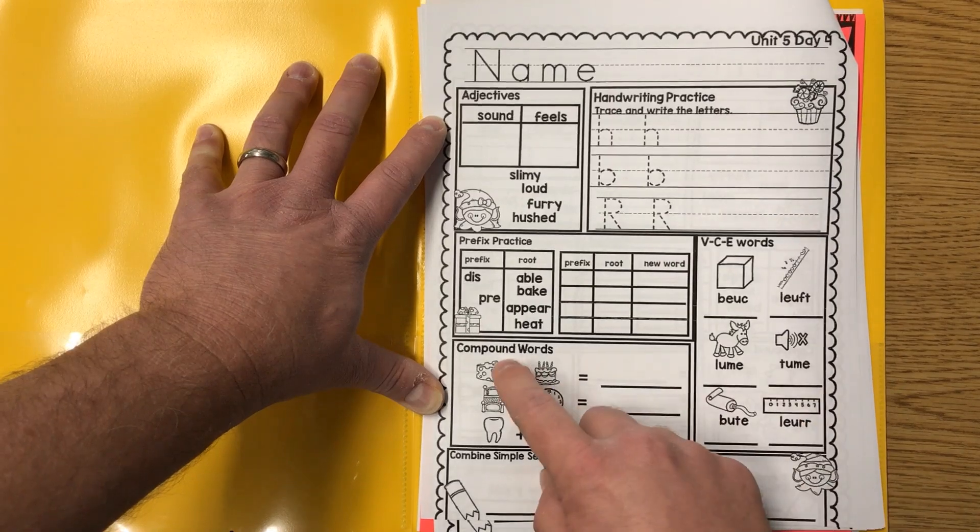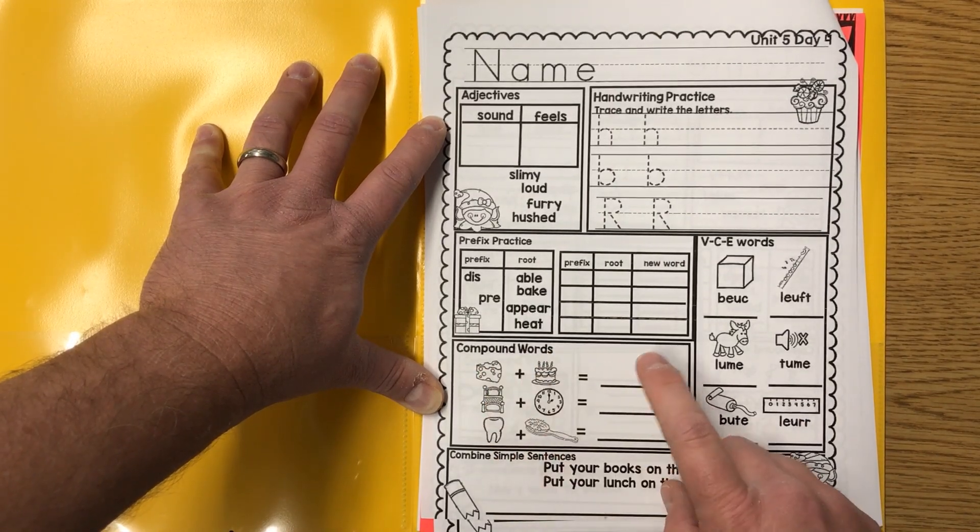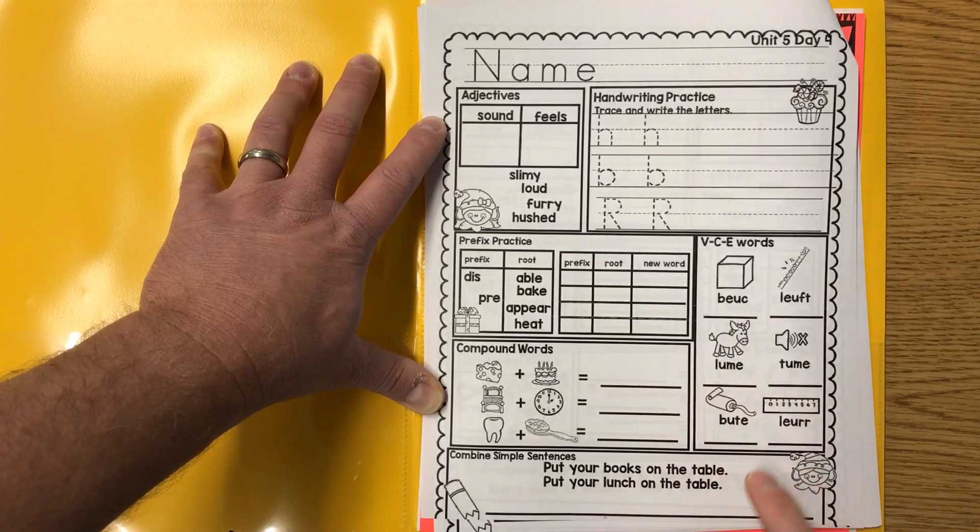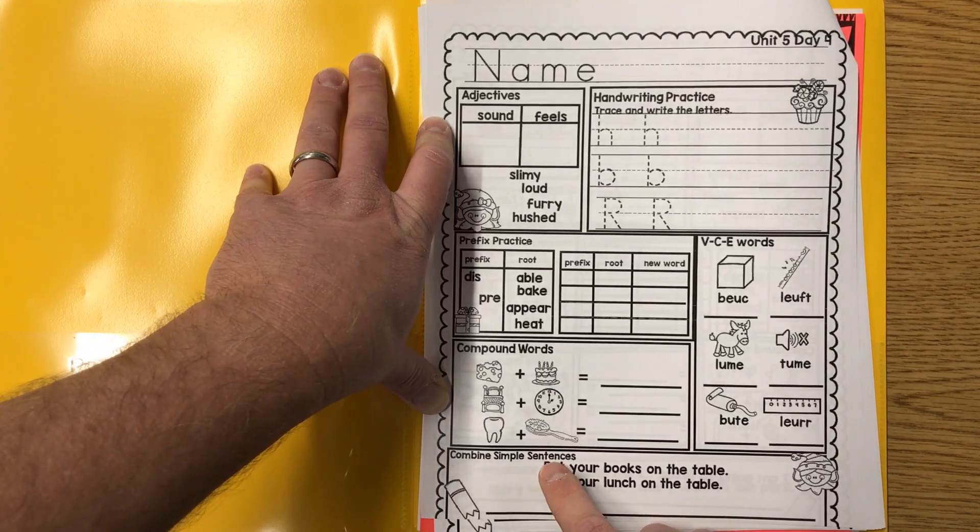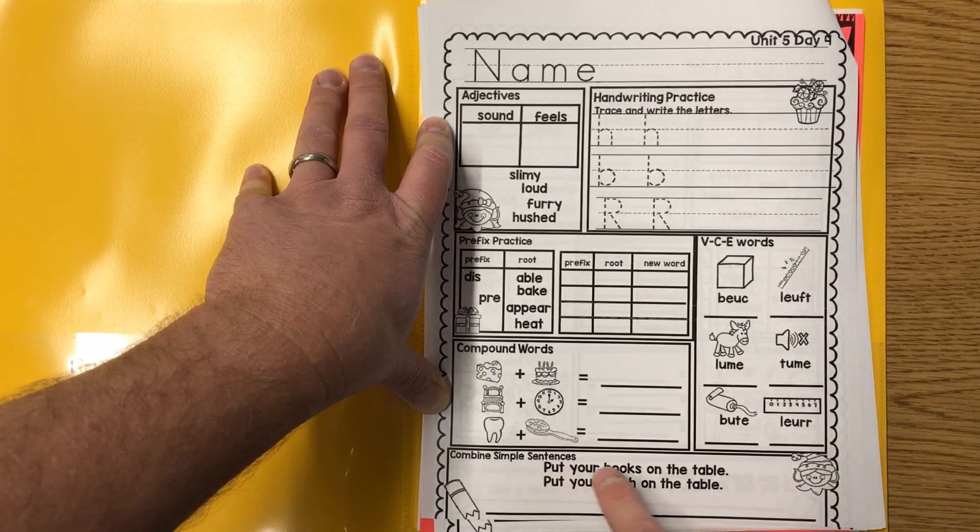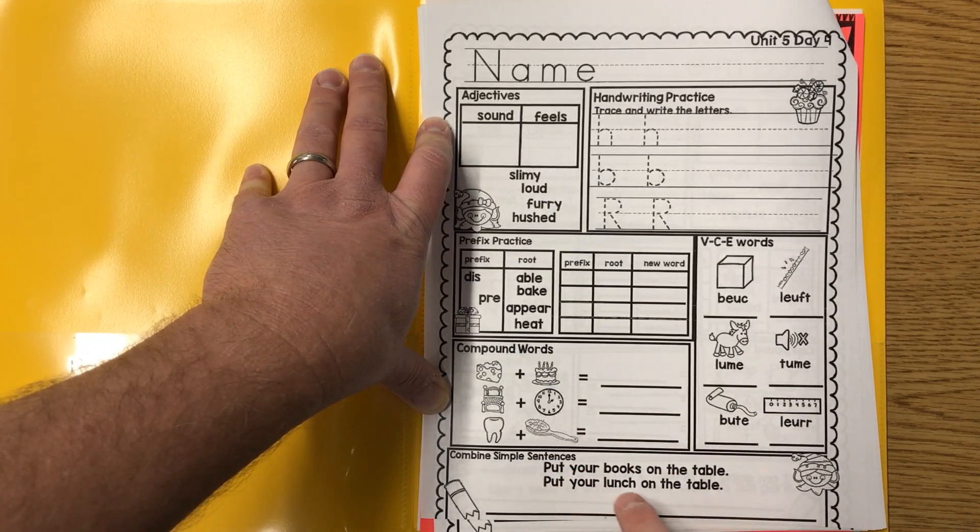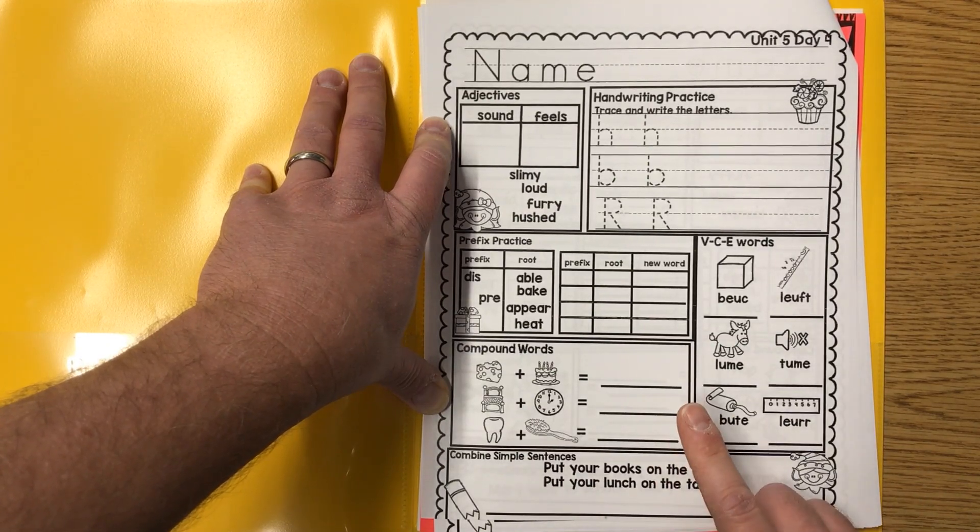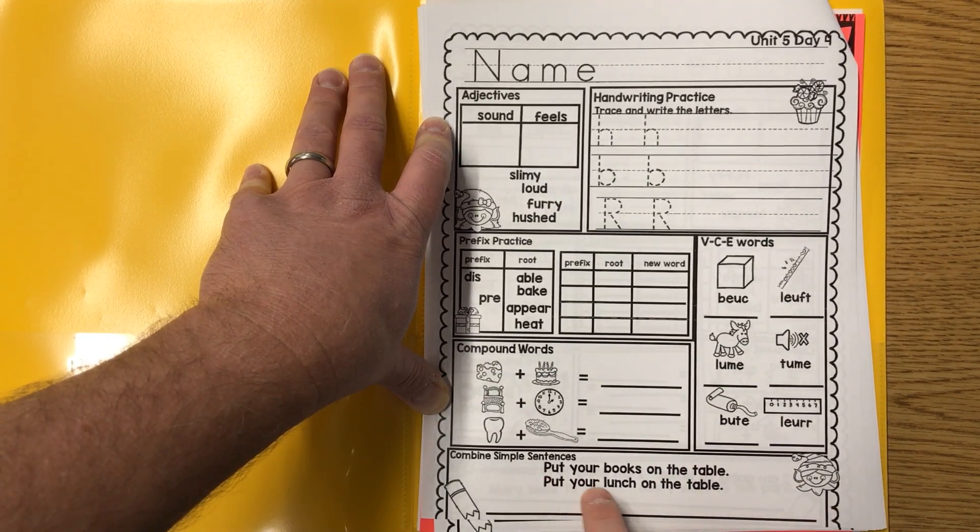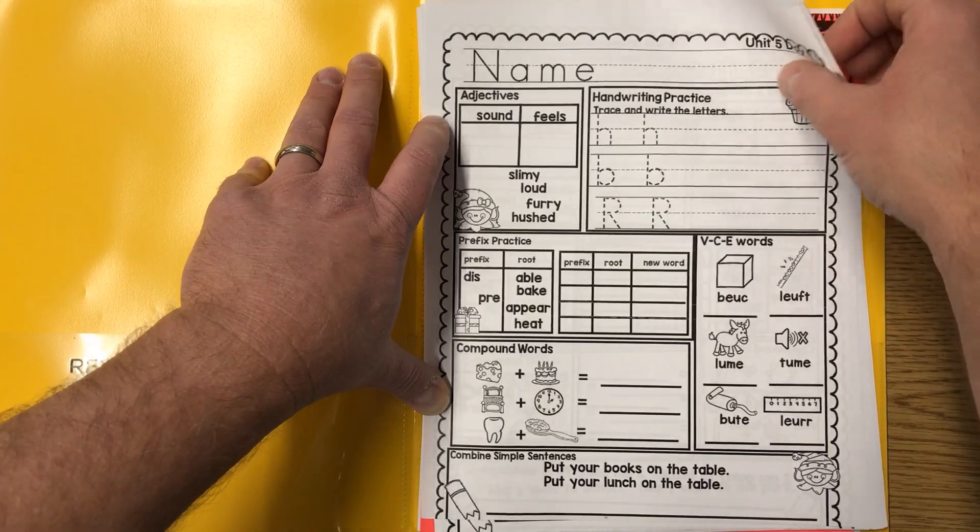Compound words: take two real things, write down what they are together, and finally combine these simple sentences with and as a way to do it. Put your books on the table, put your lunch on the table, combining with and. Or get rid of something that's similar, like put your, get rid of it.